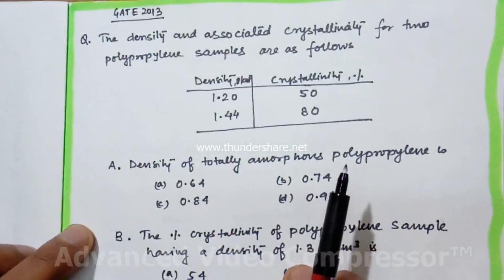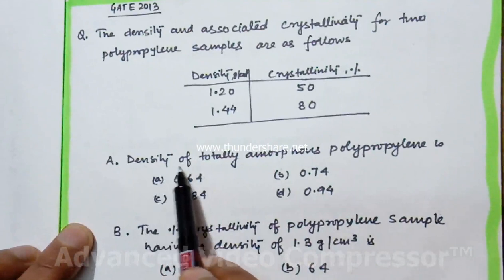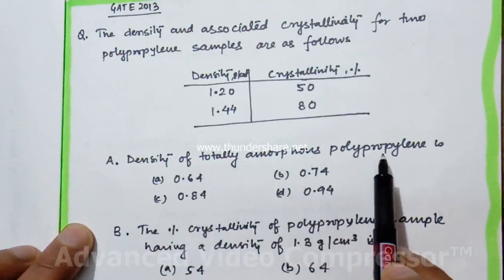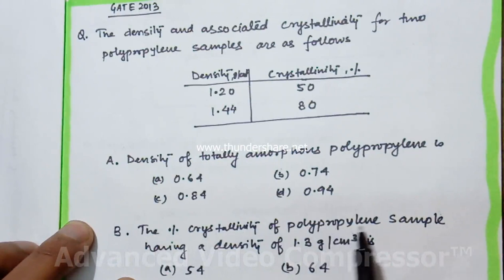The question asks: what is the density of totally amorphous polypropylene? And part B asks: what is the percentage crystallinity of polypropylene sample having a density of 1.3 gram per centimeter cube?